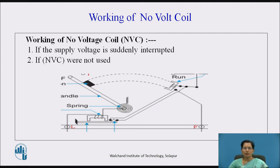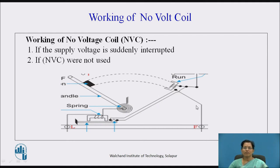If the no-volt coil were not used, what would happen? Then this arm remains at its position, and when suddenly the supply comes back, the total voltage is connected across the armature winding, and very large current flows through the armature winding, and the armature winding may burn. So for that reason, the no-volt coil is used in the starter.